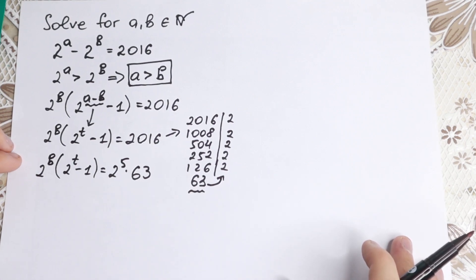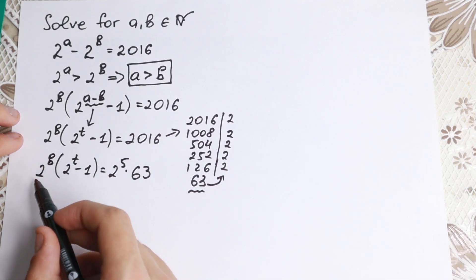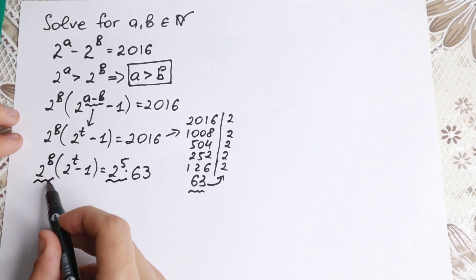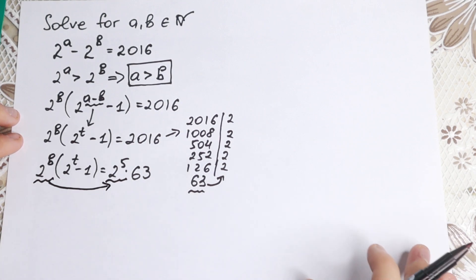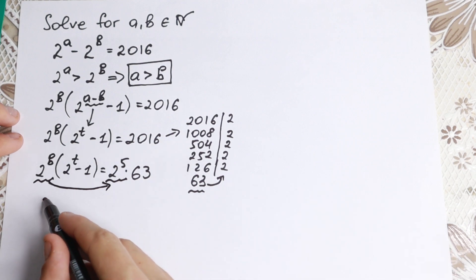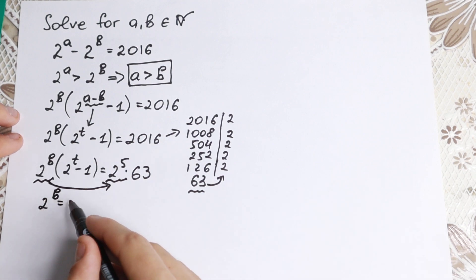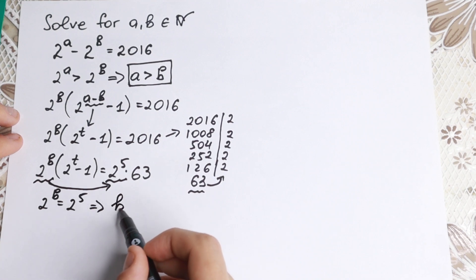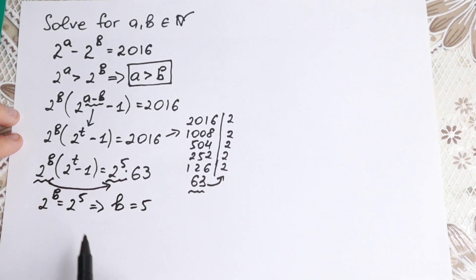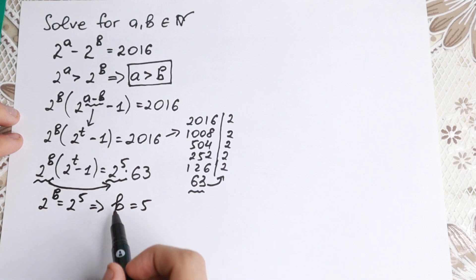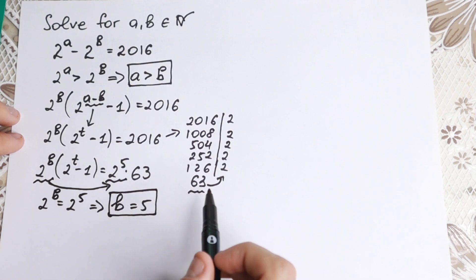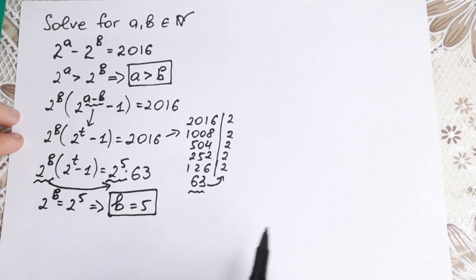The one and only case where this equation works is when 2 to the power b equals 2 to the 5th power, which means b equals 5, since the bases are the same and we compare the exponents. So b equals 5.